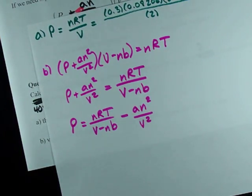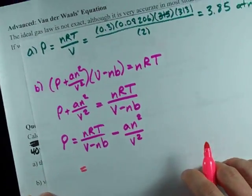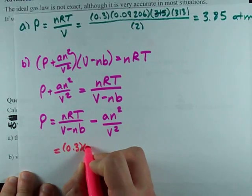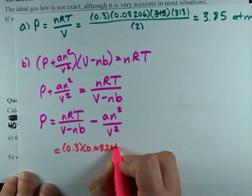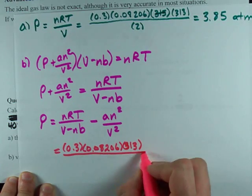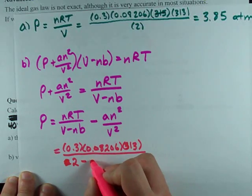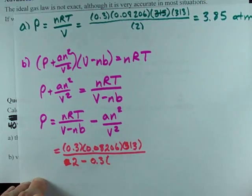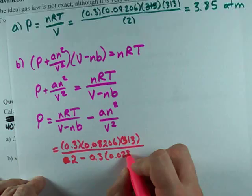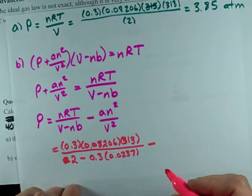Seems pretty easy. Let's just fill in the numbers. N, the number of moles, is still 0.3. I still have my R in atmospheres, 0.08206. I still have my temperature, 313 in Kelvin. And I still have my volume of 2 liters. But I'm going to subtract N times B, that's 0.3 times 0.0237.